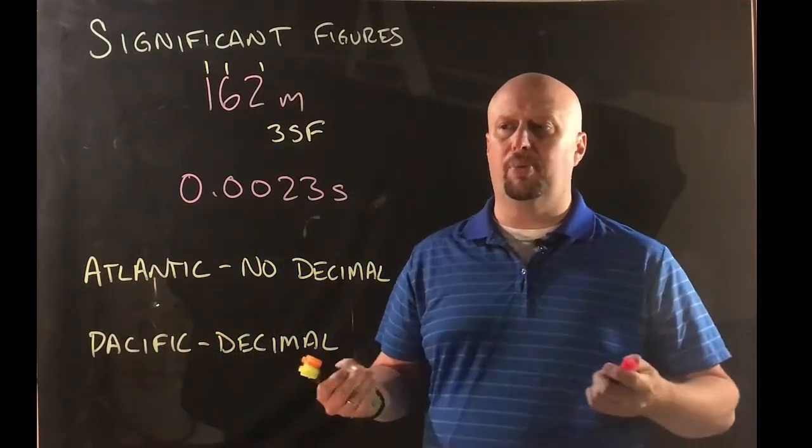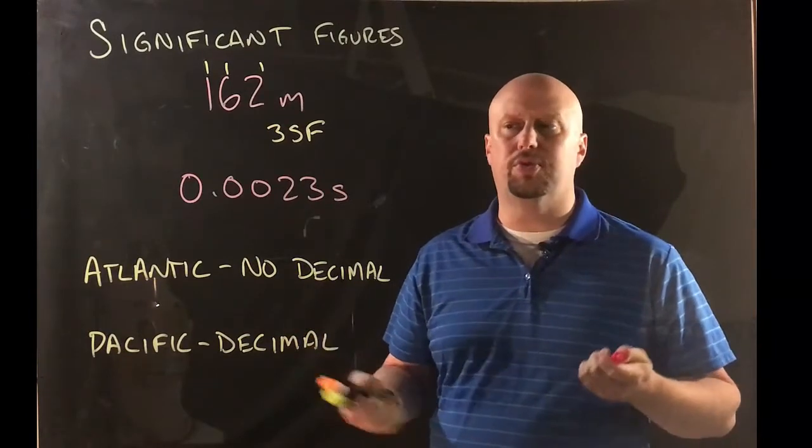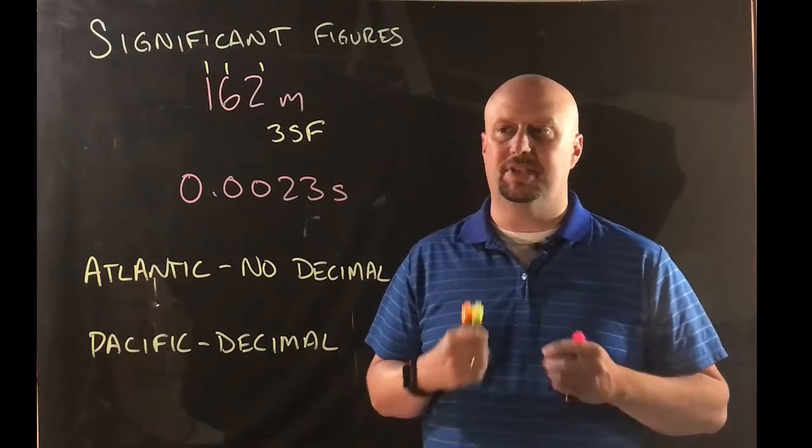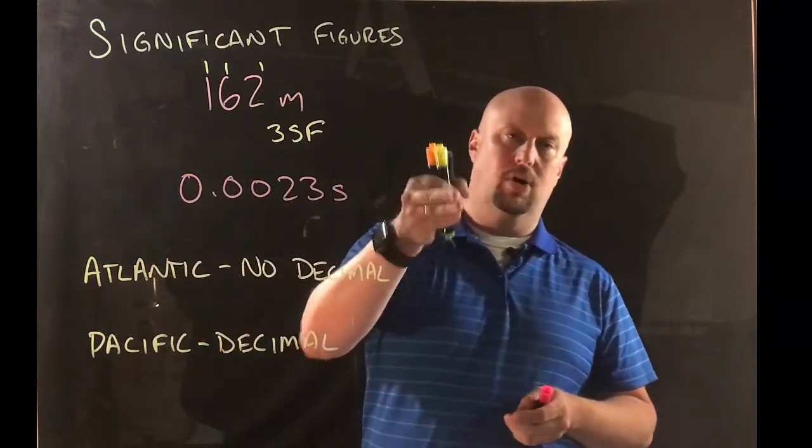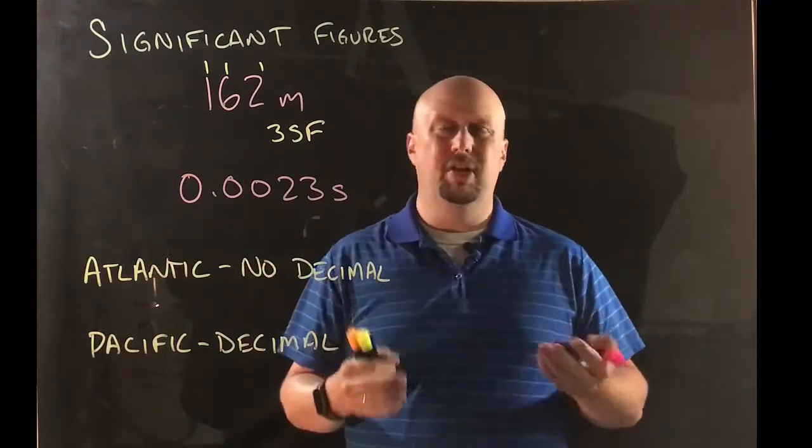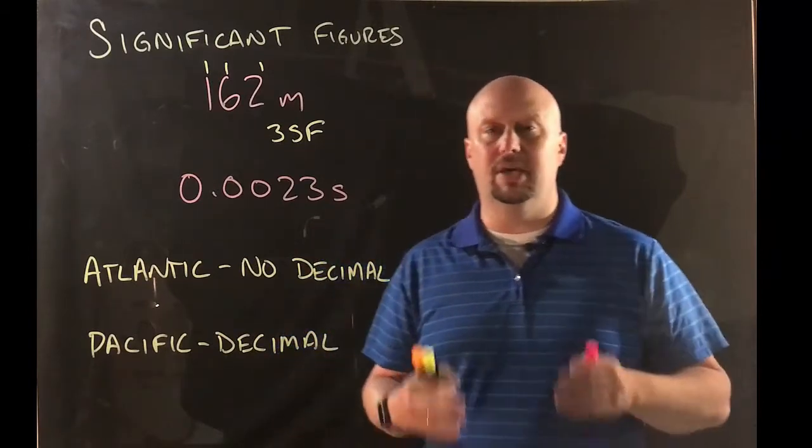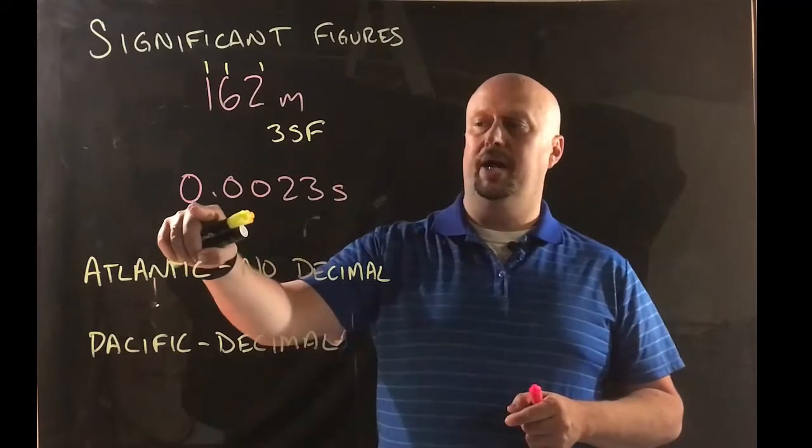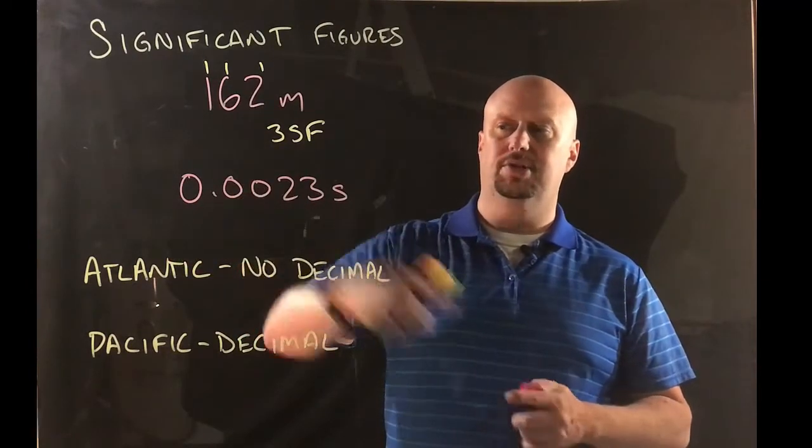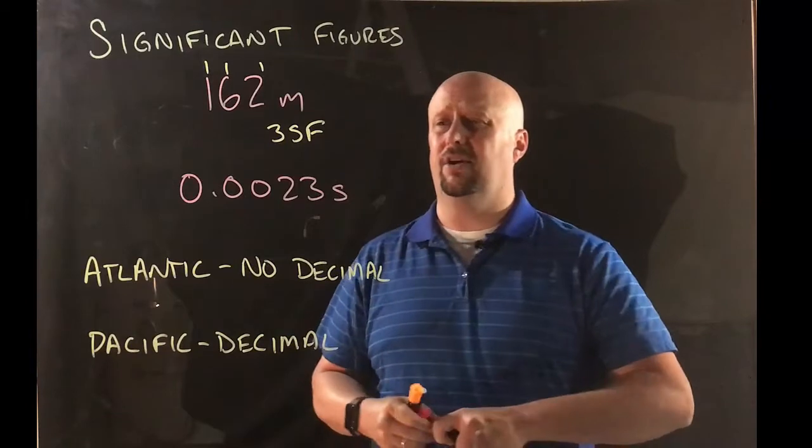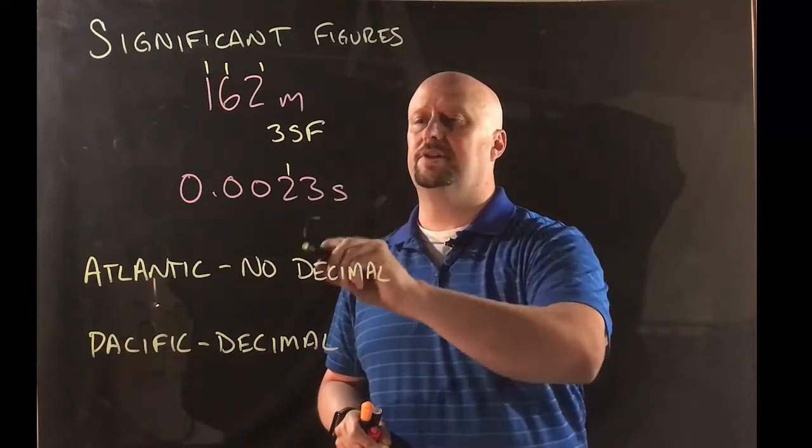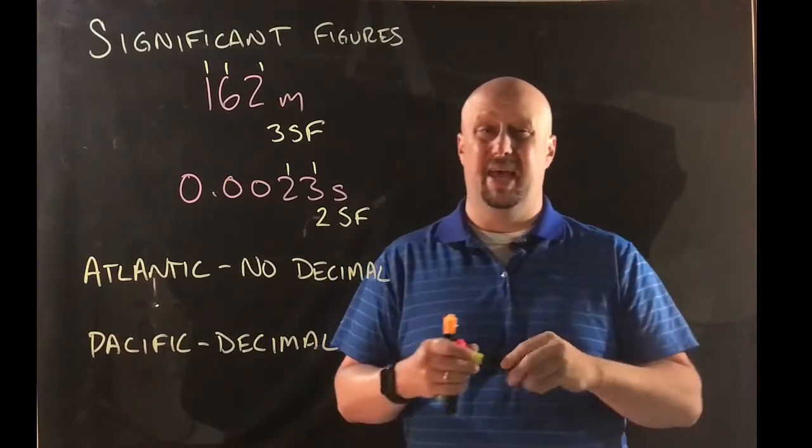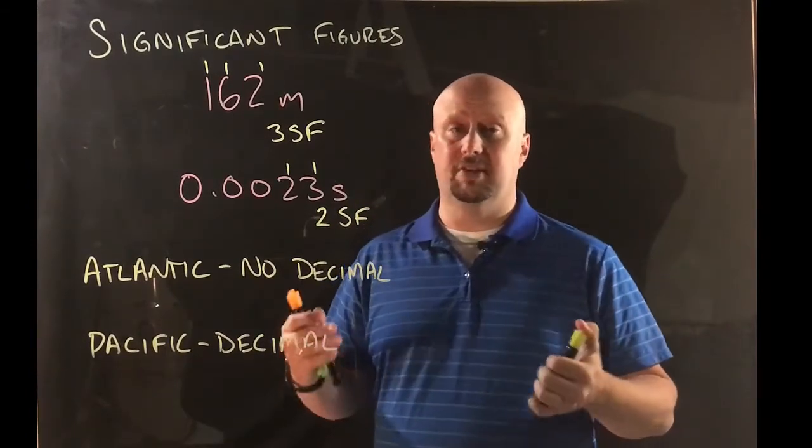Okay so 0.0023 seconds. There is a decimal so that means I'm gonna start on the Pacific side which means I'm gonna start on the left and I'm gonna work my way this way. Remember that you don't start counting until you get to the non-zero numbers. So I don't count that, I don't count that, I don't count that because those are zeros. And so then when I get over here that's my first non-zero, my second non-zero. Two significant figures. That's the essential basics of Atlantic Pacific.